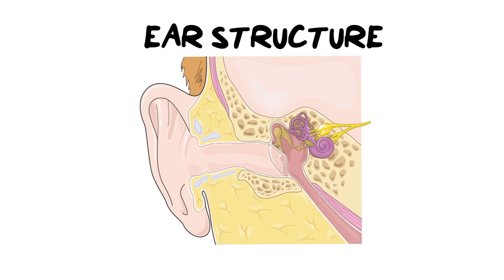Let's dive into this video. We're going to start off with an introduction to the ear structure, its anatomy and functions. First things first, let's look at the outer structure of our ear. This is the pinna — these are what we would call our ears, and their function is to trap sound waves and direct them into the middle and inner ear.